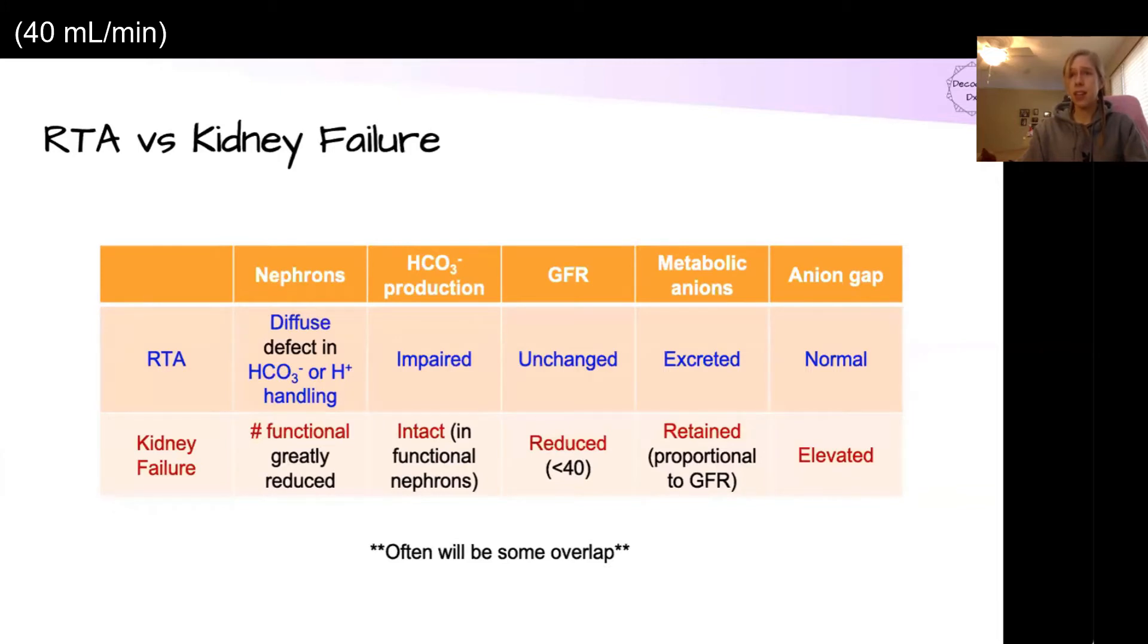In RTA, the metabolic anions themselves are going to be excreted, whereas in kidney failure, the whole etiology is that they're retained proportionally to GFR. The anion gap will generally be normal in a renal tubular acidosis, but it will be elevated in kidney failure. Again, because the issue is that we're accumulating excess acids in kidney failure, whereas the issue in RTA is mishandling of bicarbonate.